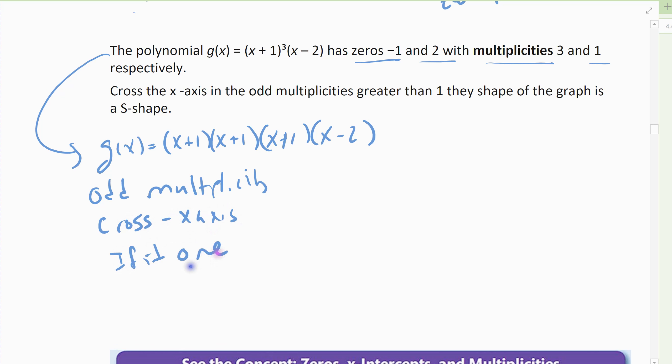If it's a 1, it crosses smoothly. If it's higher than 1, what happens is you get like this S shape out. So for this particular graph, what happens is, I've got my negative 1, so there's my negative 1, 0, and my 2, 0.